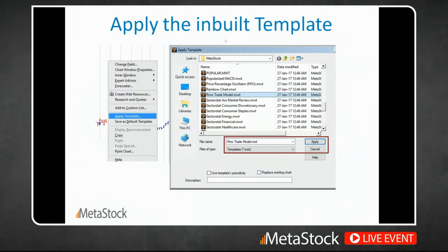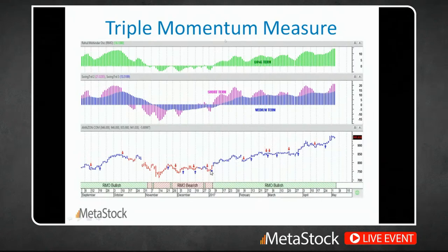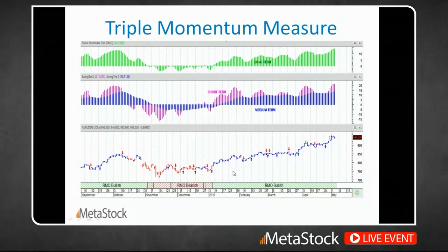The moment you apply the template, you automatically get the entire suite of the RMO indicator set. Right on top is the RMO oscillator. The second window has what I call the swing trade indicators, which calculate the short-term and medium-term trends. You also have the exit swing indicator, which will help us exit the market. Then you have the core price chart shaded in blue bars or red bars — blue bars indicate a medium-term positive trend, red bars indicate a medium-term negative trend. The arrows on the chart are signals of short-term trends: a buy arrow when the short-term trend is up, a red sell arrow when the short-term trend turns down.